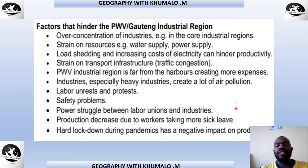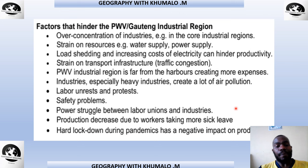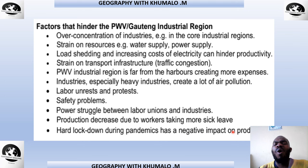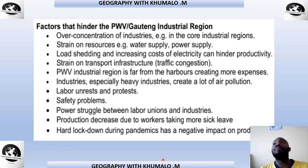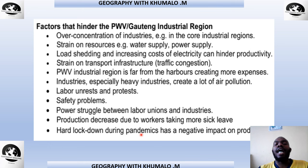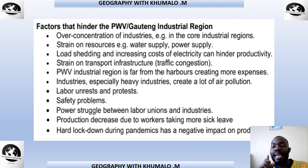When labor unions and industries don't find common ground on working conditions, it tends to delay production. Production also decreases due to workers taking sick leave — which is why many businesses offer medical aid, so workers can recover quickly and return. The hard lockdown during COVID-19 had a very big negative impact on productivity, as few people were allowed to work and certain numbers were restricted, reducing industrial output.